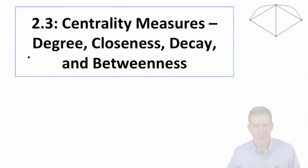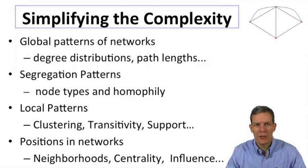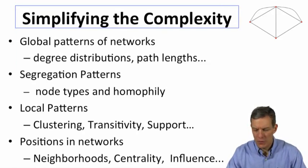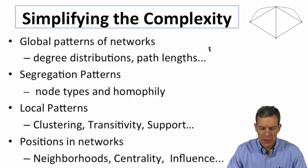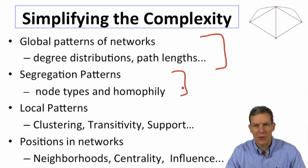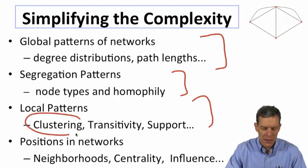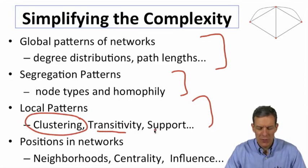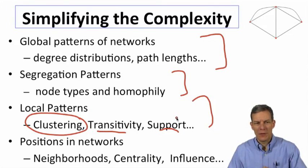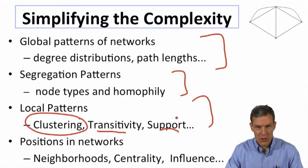So now we're looking at centrality measures. We're going to talk about positioning nodes inside a network and understanding how they're positioned. What we've done so far is we talked about basic patterns in networks, degree distributions, path links, things like that that characterize networks. We talked a little bit about homophily and the fact that there can be segregation among nodes, local patterns like clustering and related concepts of transitivity.